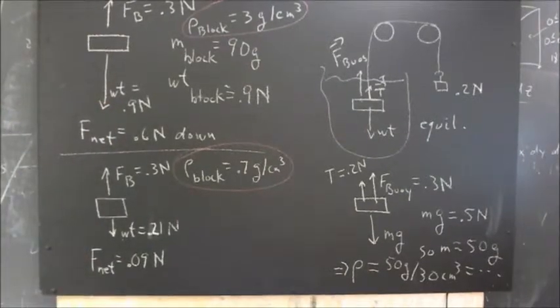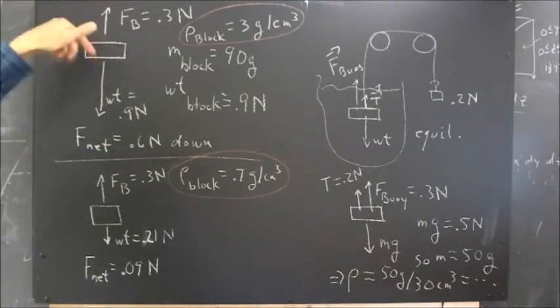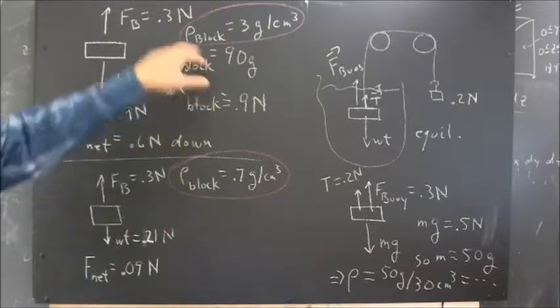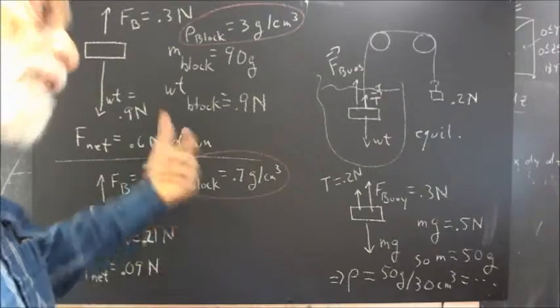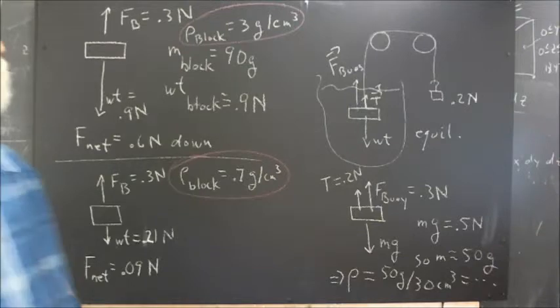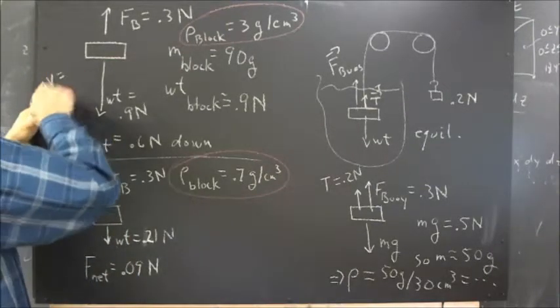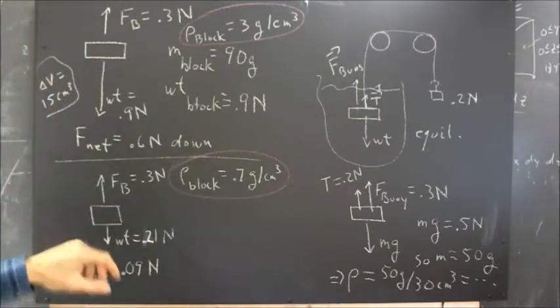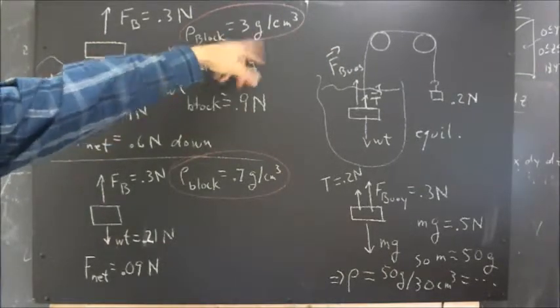And the block will also have the weight force. Now what's the weight force? Well, if the density of the block is 3 grams per cubic centimeter, recalling that the block has volume 15 cubic centimeters, and I'll write that down here, then the mass of the block is going to be 90 grams, 3 grams per cubic centimeter.